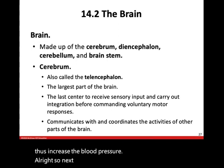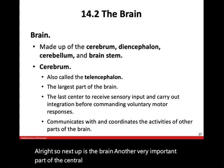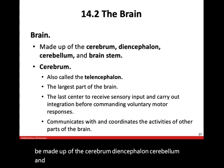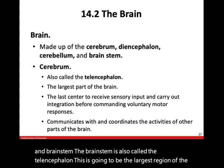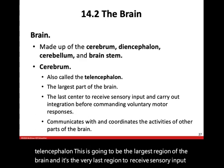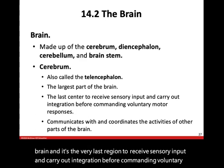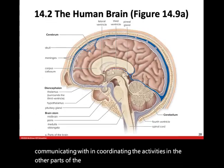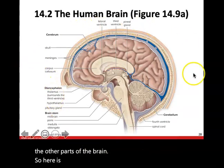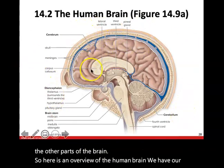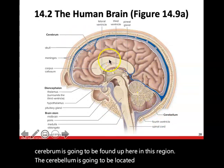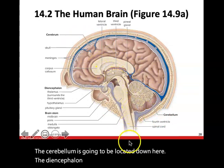Next up is the brain, another very important part of the central nervous system. The brain is made up of the cerebrum, diencephalon, cerebellum, and brainstem. The cerebrum is the largest region of the brain — it is the last region to receive sensory input and carry out integration before commanding voluntary motor responses, and it's responsible for communicating with and coordinating the other parts of the brain. The cerebellum is found below the cerebrum, the diencephalon is right towards the middle, and the brainstem branches down from there.